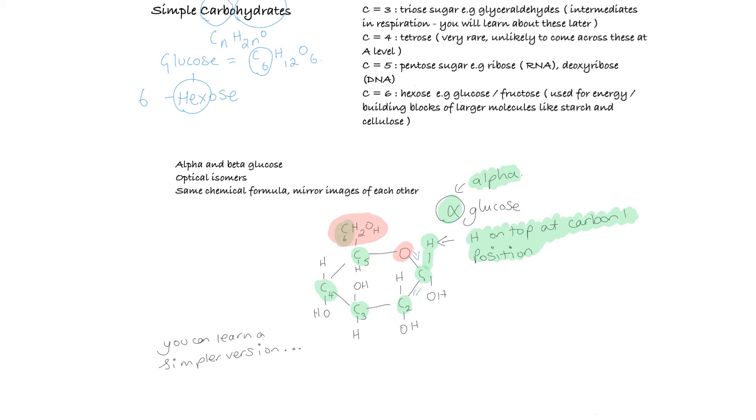It's really important to note that the sixth carbon is a CH2OH attached up here and it sticks out at the top on this alpha glucose molecule. But you can learn a much simpler version. You don't have to draw this complex version with all of the molecules. You can essentially draw one that doesn't have the carbons in it, just has them as the angles in the shape with just the key hydrogen and OH molecules.